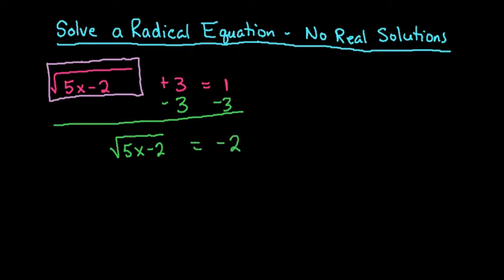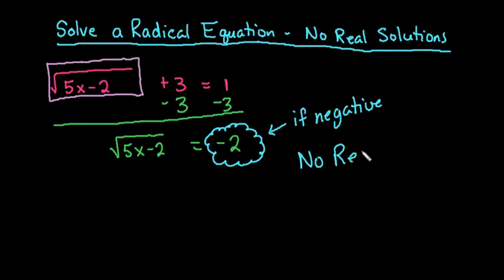Since this is negative, we are only looking for positive roots. We are not looking for negative roots because then it is no longer a function if it has both a positive and negative. So any time this is negative, then there are no real solutions.